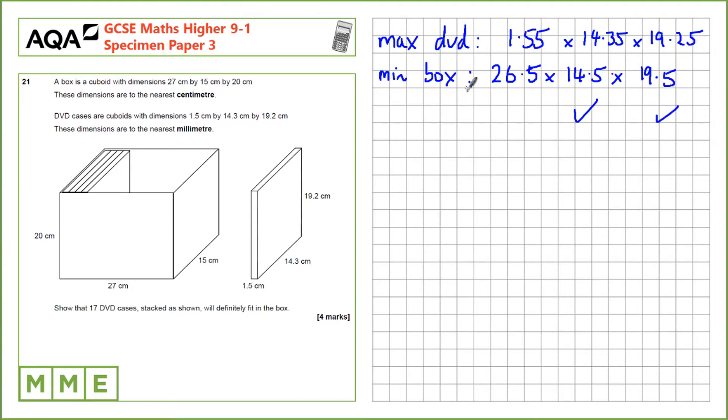We need to see how many DVDs we can fit into this 26.5 centimetres if they're 1.55 centimetres large. So we take the 26.5 centimetres and divide by 1.55 to see how many times it fits in, which is 17.096 times. Since this is greater than 17, we can definitely fit 17 cases into the box.